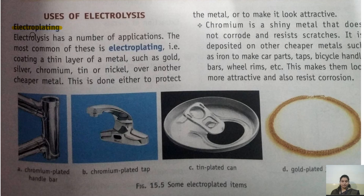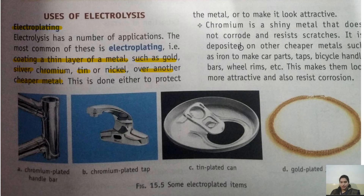Electrolysis has a number of applications; the most common is electroplating. Electroplating is coating a thin layer of metal — such as gold, silver, chromium, tin, or nickel — over another cheaper metal. We see various products in the market: jewelry, household materials like handlebars on bikes, and taps that are all coated with certain metals.